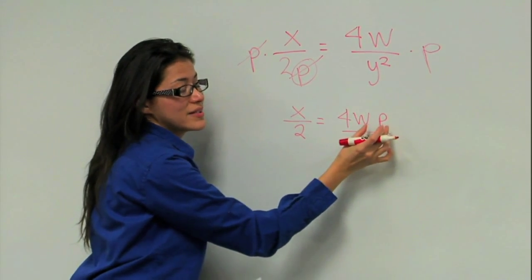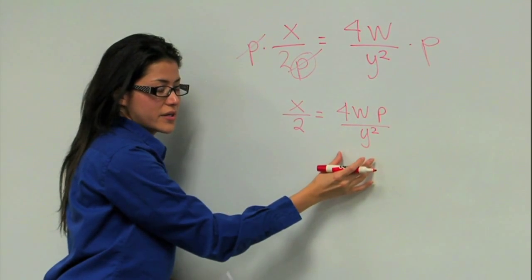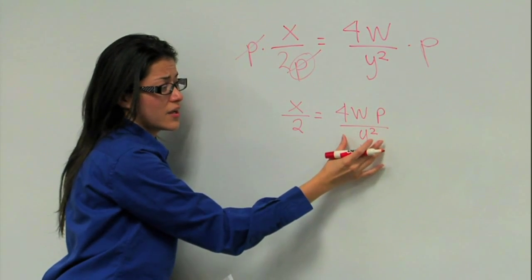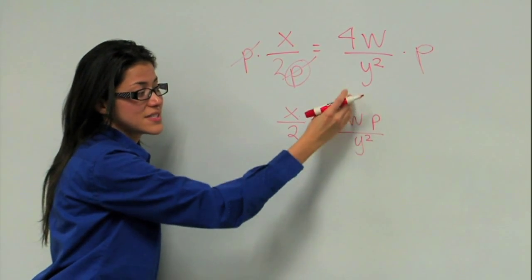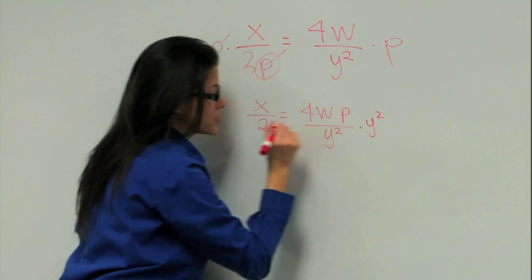But we still don't have P by itself. We need to get rid of the 4W and the Y squared. So first, let's get rid of the 4Y squared. How do we get rid of the Y squared? If it's dividing here, we have to multiply by Y squared. Again, on both sides.